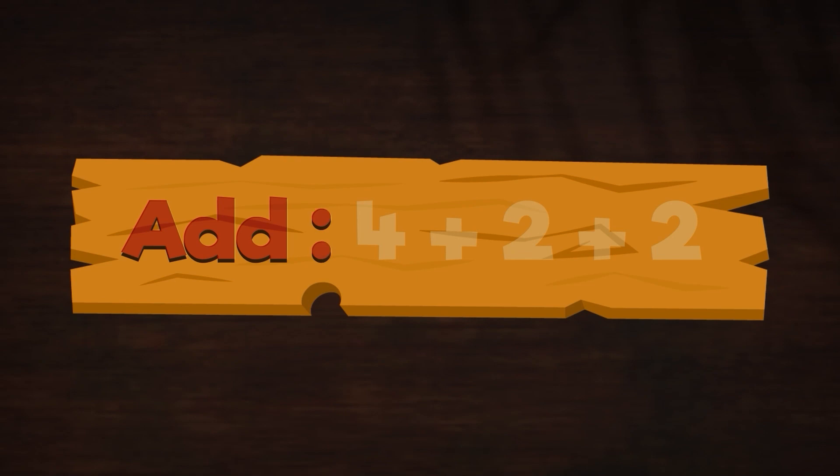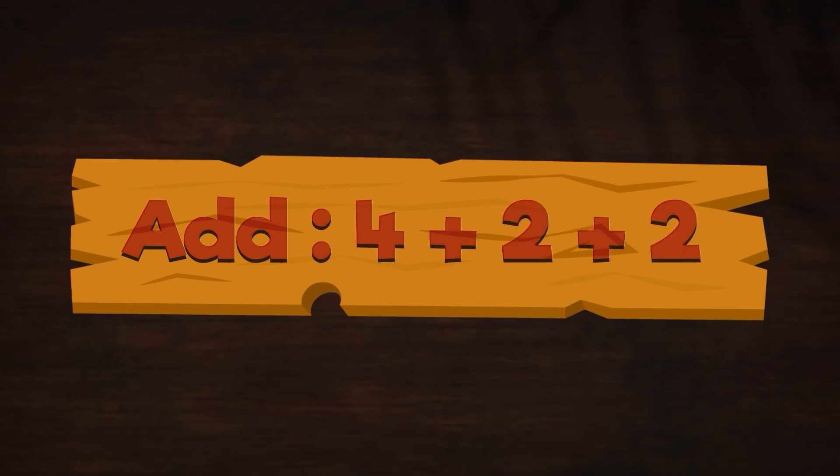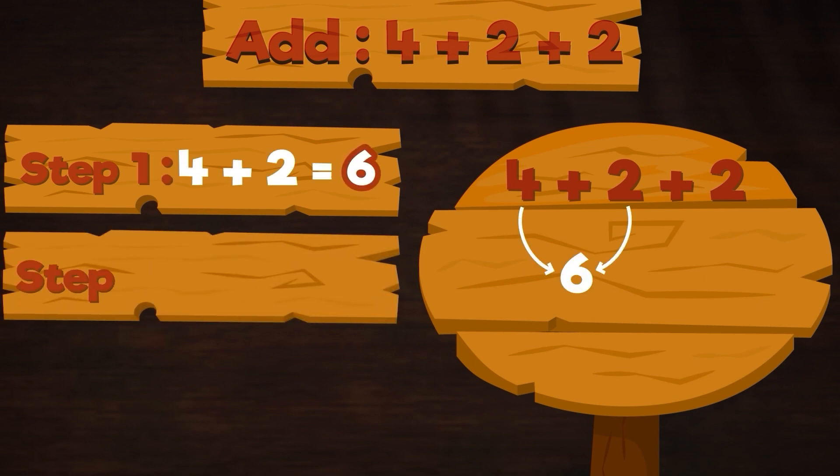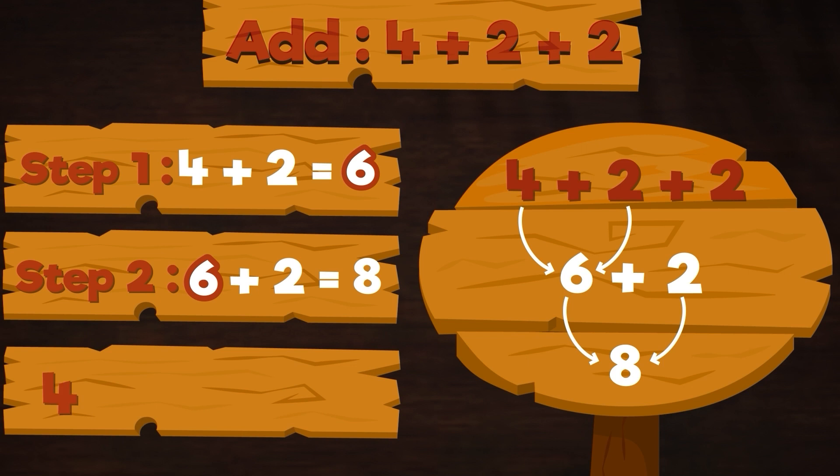Add 4 + 2 + 2 + 2. Step one, 4 + 2 = 6. Step two, 6 + 2 = 8. So 4 + 2 + 2 = 8.